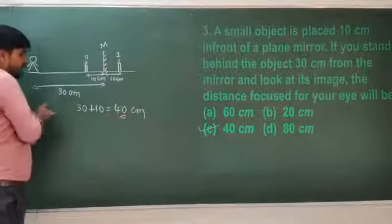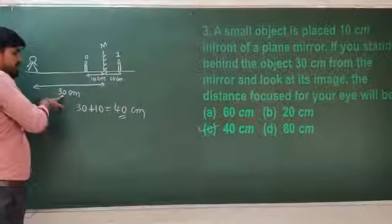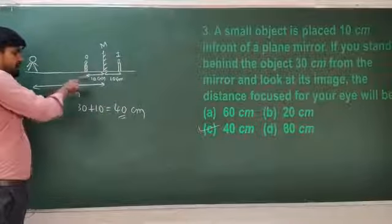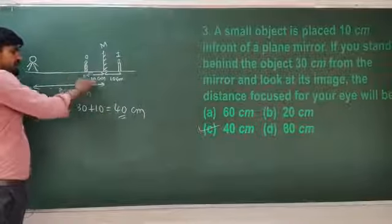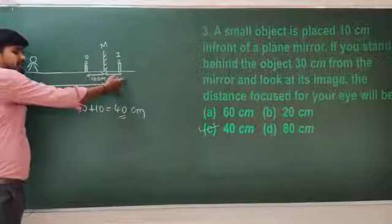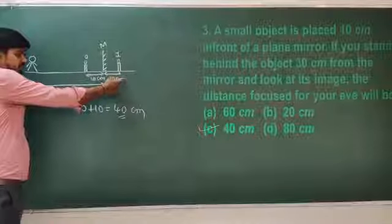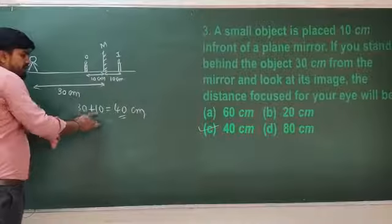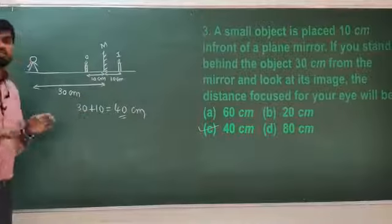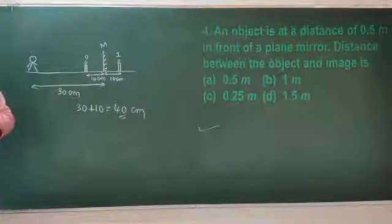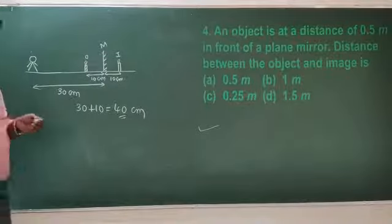The person is 30 centimeters from the mirror and the image is formed at 10 centimeters behind the mirror, so 30 plus 10 gives 40 centimeters as the focusing distance.